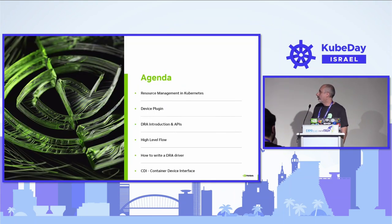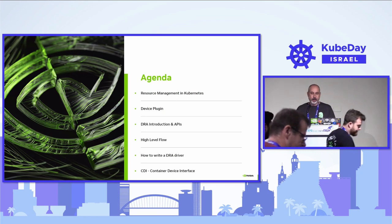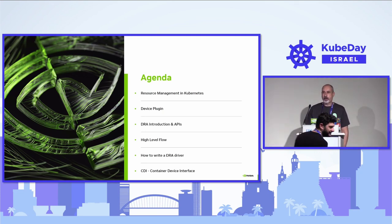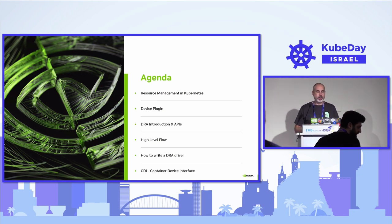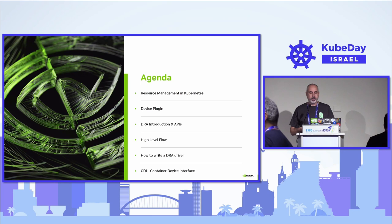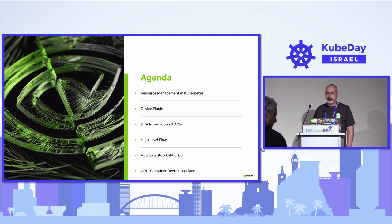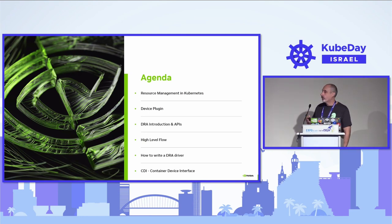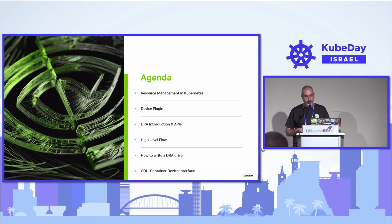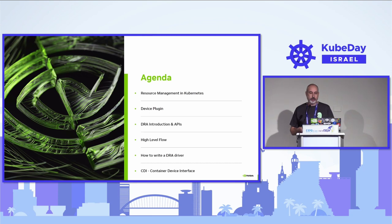Let's take a look at the agenda. First, we'll go over different resources available for your workload and how you actually request them. Then we'll talk about the device plugin, how they work and what are their limitations. Then we'll go over DRA and its main APIs, followed by a deep dive into the DRA driver flows. We'll also go over the steps needed to build your own DRA driver. Lastly, we'll cover CDI, the container device interface, which is required by DRA drivers.